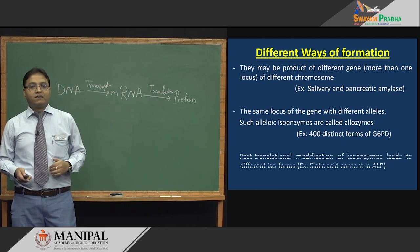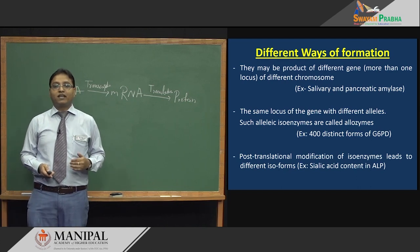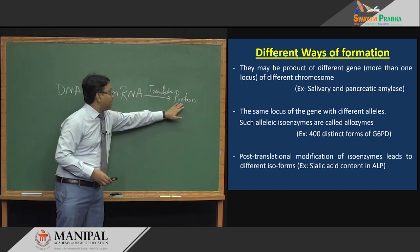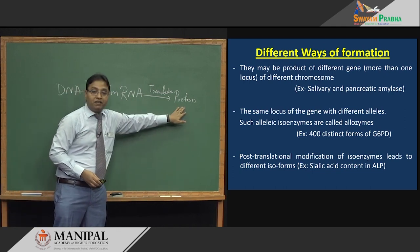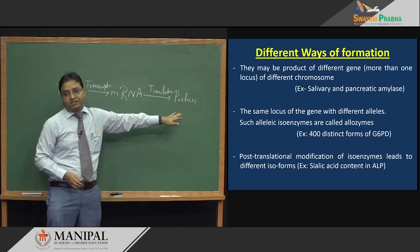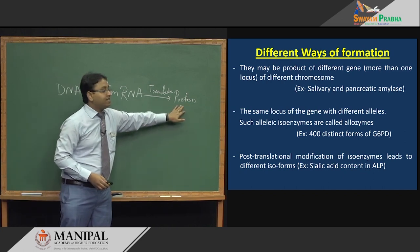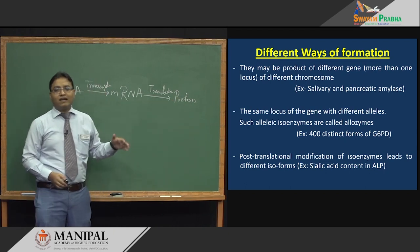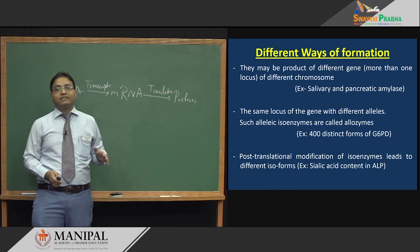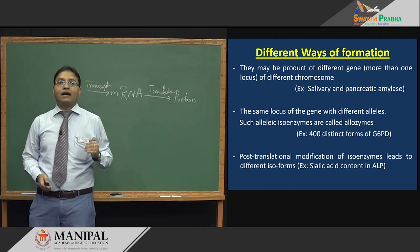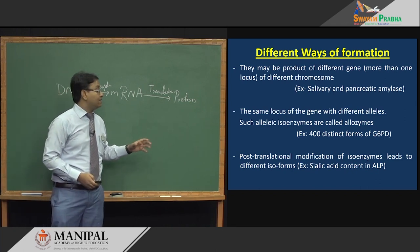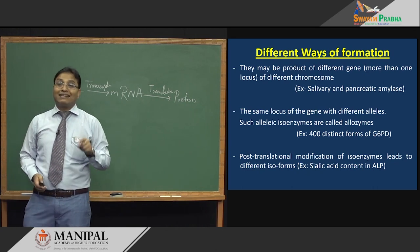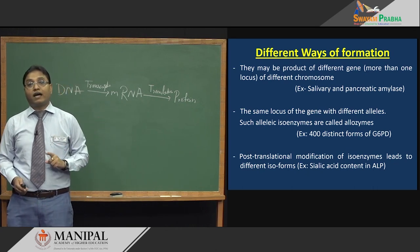The third type is post-translational modification of proteins leading to different isoforms. After translation from mRNA to protein, changes can happen to the protein — additions or deletions. One example is the addition of sialic acid to ALP (alkaline phosphatase), where the sialic acid content differs across different ALP isoenzymes.